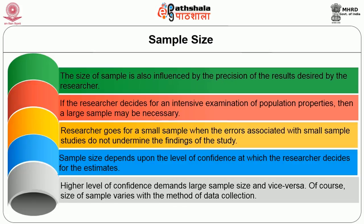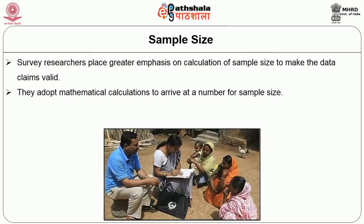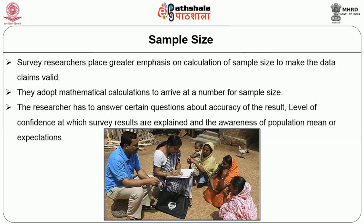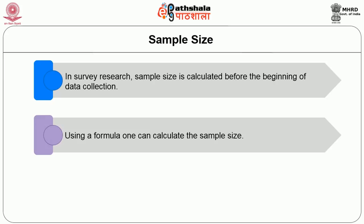Of course, the size of sample varies with the methods of data collection. Survey researchers place greater emphasis on calculation of sample size to make data claims valid. They adopt mathematical calculations to arrive at a number for sample size. In survey research, the researcher has to answer certain questions about accuracy — for example, how accurately the data findings should be, the level of confidence at which results are explained, and the awareness of population mean or expectations. Sample size is calculated before the beginning of data collection using a formula.